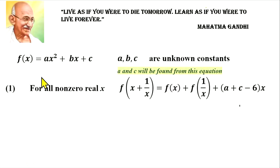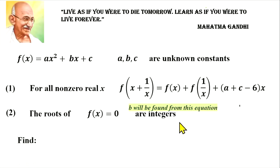For all nonzero real x, f of x plus 1 over x equals this form. There is another property of this function, namely the roots of equation f of x equals 0 are integers. We need to find a squared plus b squared plus c squared.